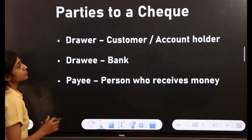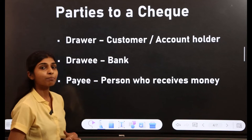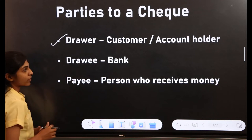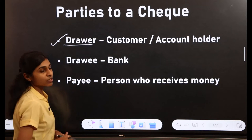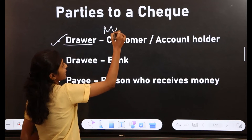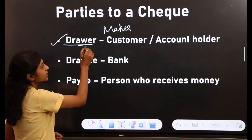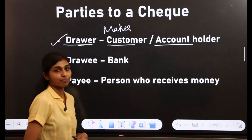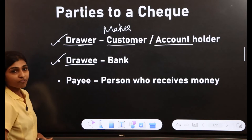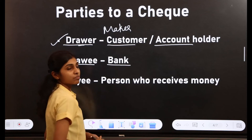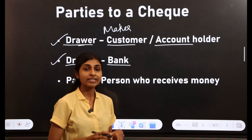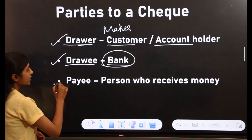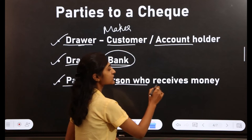Next is parties to a check. There are three parties involved. First is the drawer — the person who draws or makes the check, usually the customer or account holder. Second is the drawee — the bank on whom the check is drawn. In case of a check, the drawee is always the bank.